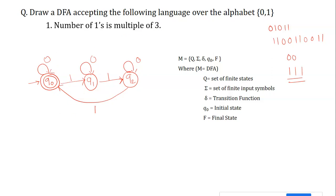Self-loops on zeros are present at q0, q1, and q2, meaning any number of zeros can appear anywhere in the string. The DFA is now complete: we have an initial state, a final state, and all input transitions from every state are defined.